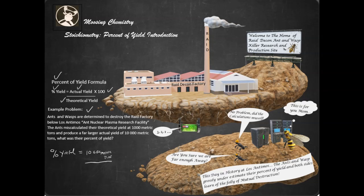Divided by their theoretical yield, which they calculate to be 1,000 metric tons. And then they're going to times that by 100.